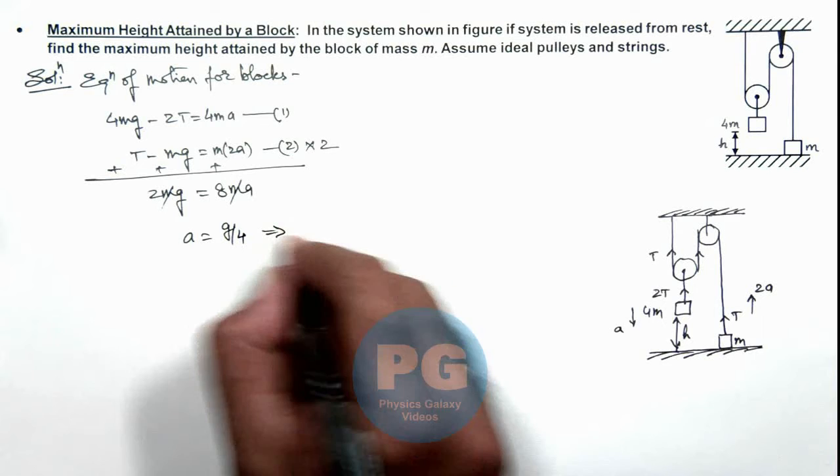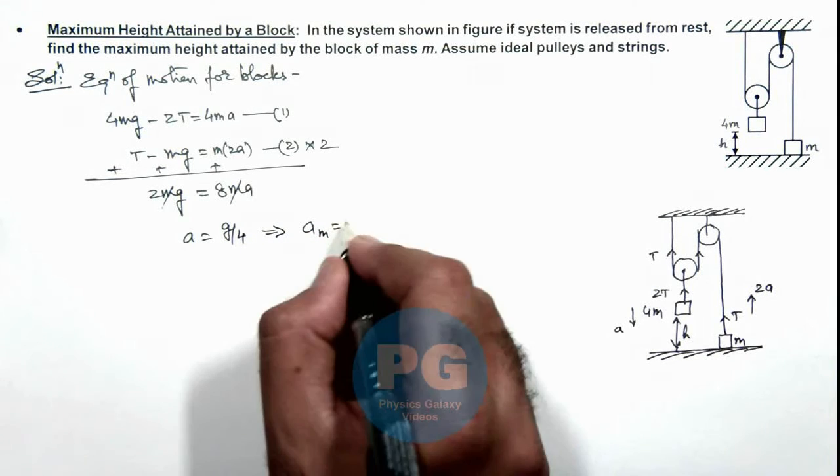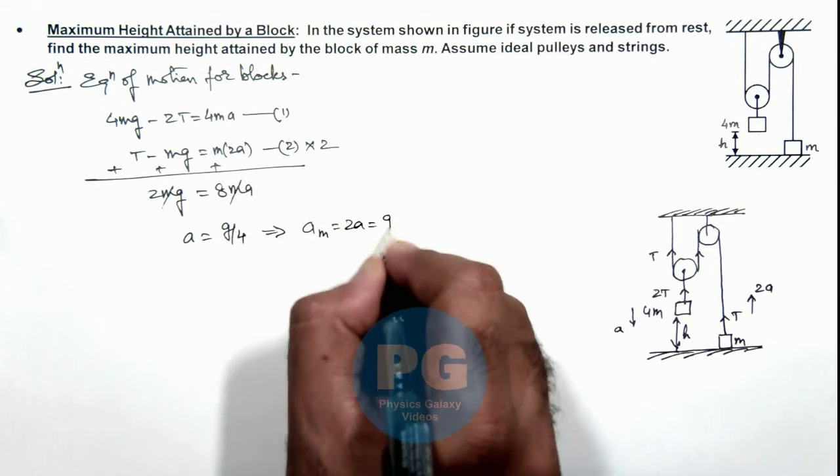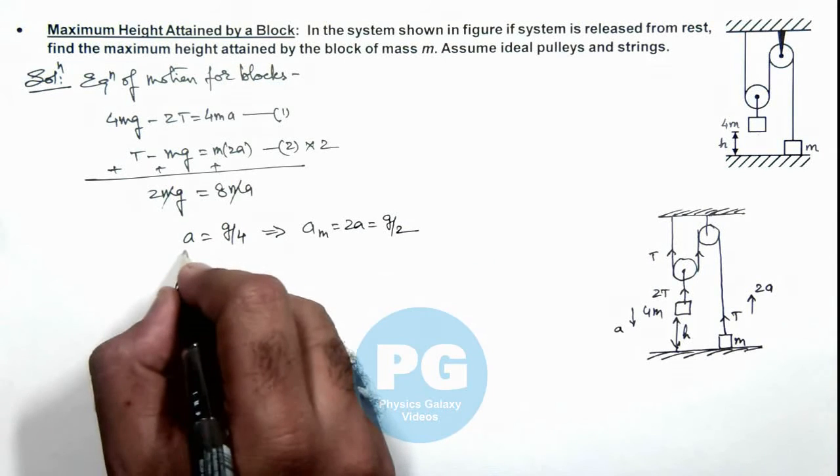This implies the acceleration of mass m will be 2ay, which will be g by 2. The acceleration of mass 4m is g by 4.